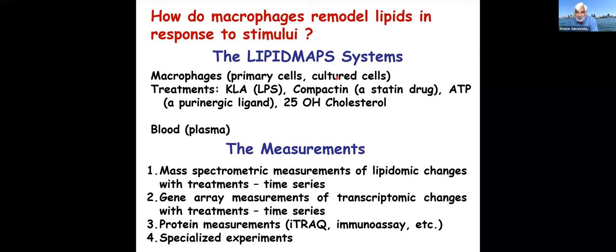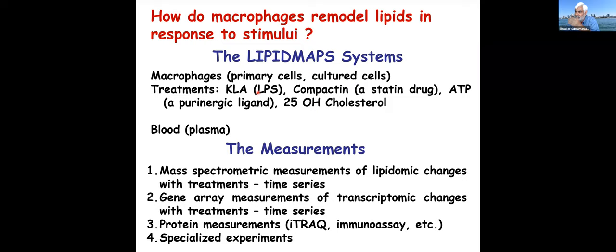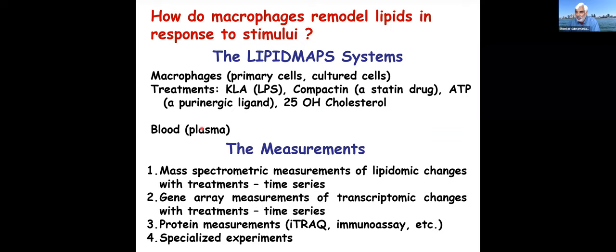We use primary cultured macrophage cells. The treatment uses the active part of E. coli lipopolysaccharide, called KDO2 lipid A, abbreviated as KLA. This is the active component of LPS which tells the cell it's being infected and starts producing a response — producing cytokines and secondary cellular immunity. We also do treatment with compactin, the statin drug, and an activating molecule called ATP. We also look at blood plasma in murine systems and human plasma.